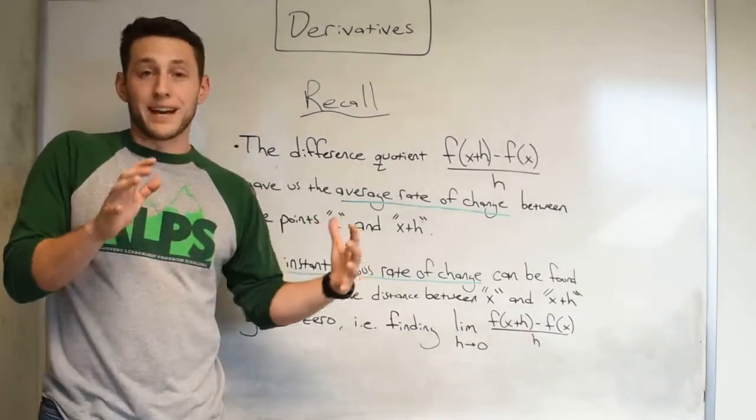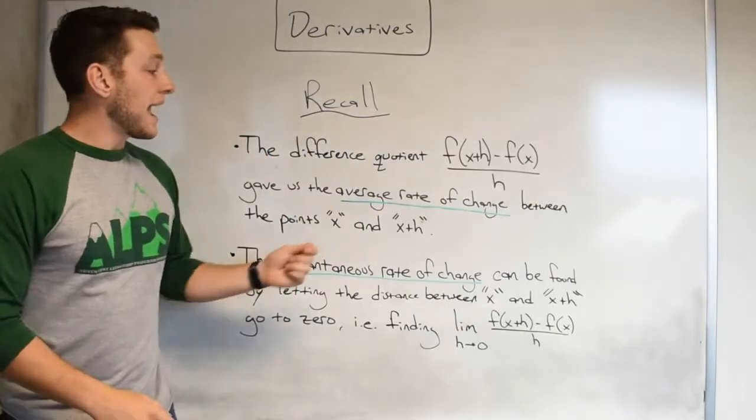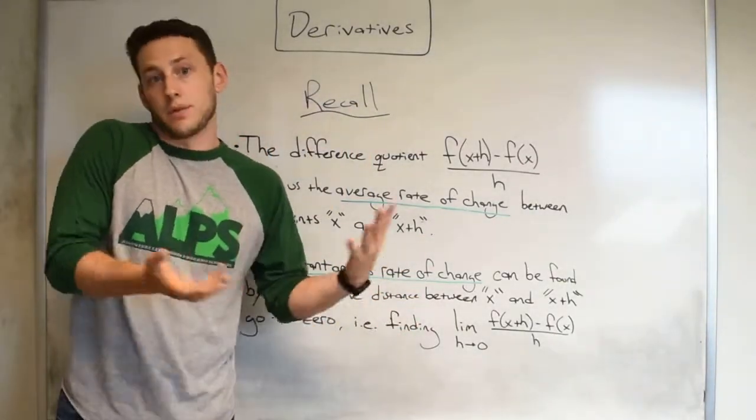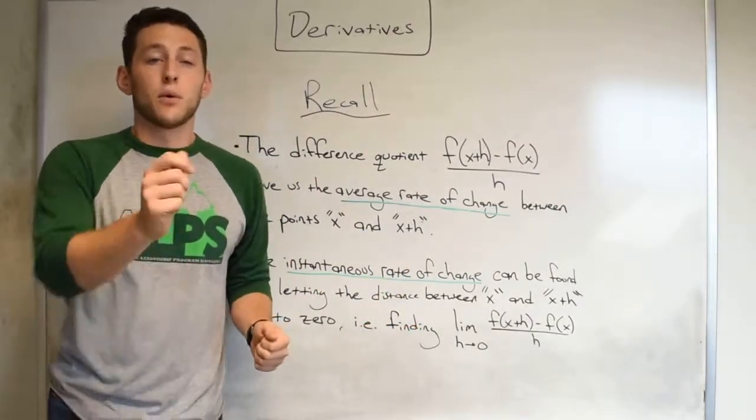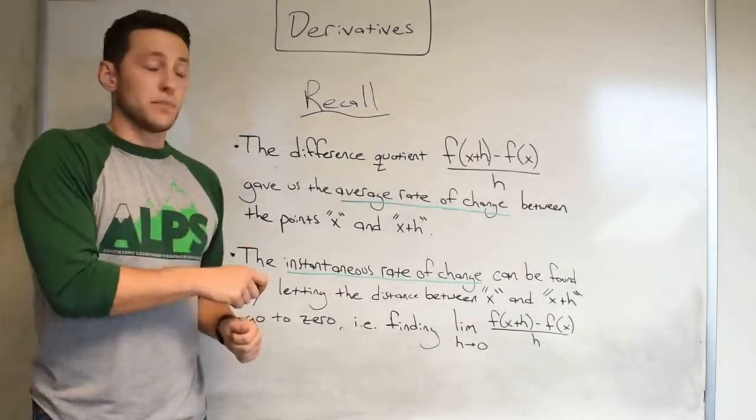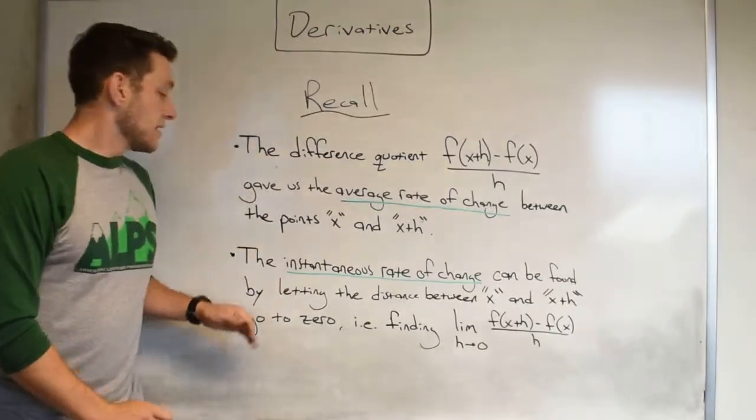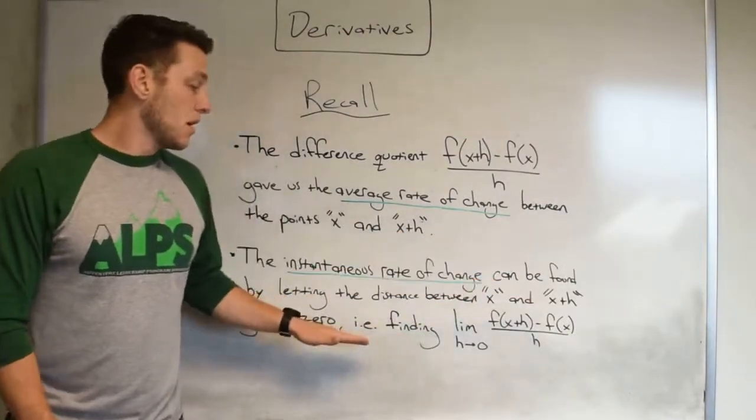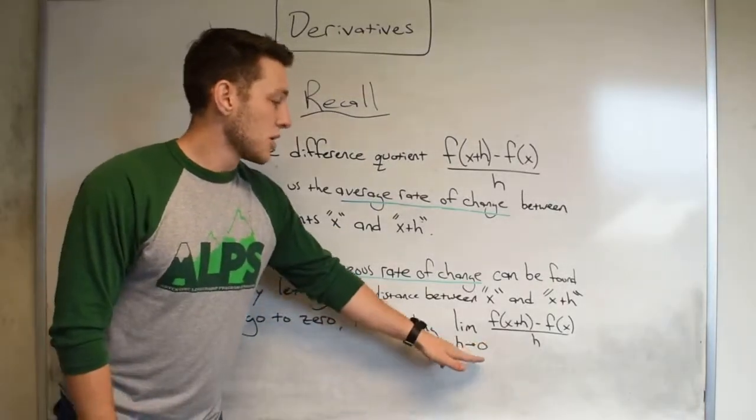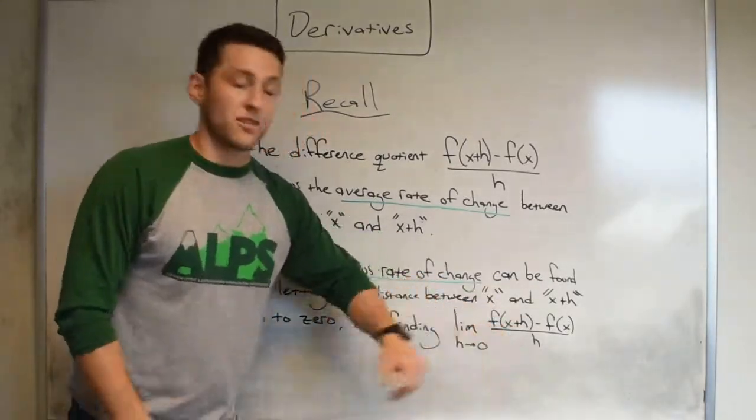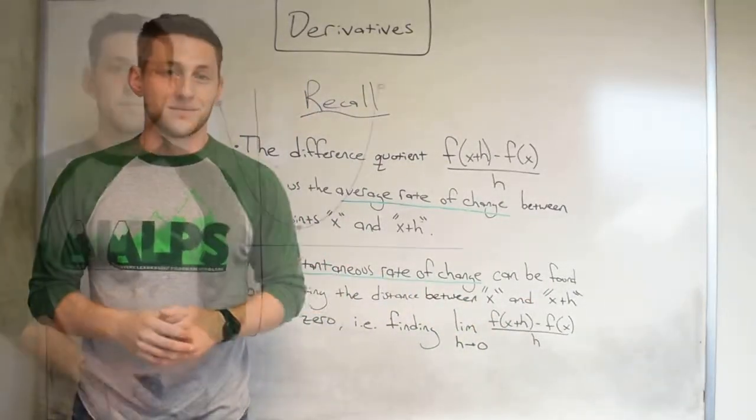Now what if we let the distance between x and x plus h go to zero? Well since h was the distance between x and x plus h, that would be the same thing as letting h go to zero. Now what we land on if we do that experiment is going to be called the instantaneous rate of change. And this can be found by letting the distance between x and x plus h go to zero, or in the exact same manner, find the limit as h goes to zero of the difference quotient. Now this has a graphical counterpart which we're going to get to.